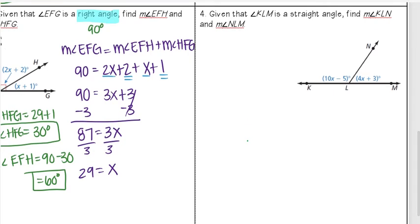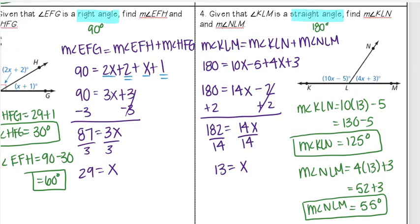Go ahead and pause the video and try to do that last one on your own. Okay, these are the answers you should have gotten on that last one. You should have gotten 125 degrees and 55 degrees. For this one, I showed the other way that you can just plug in your value for x to find that second angle, and you'll still get the same answer. But if you notice, if I did 180 minus 125, that still would have been 55 degrees, so either way works.